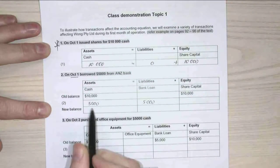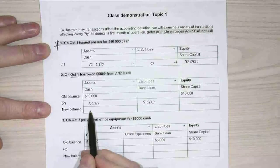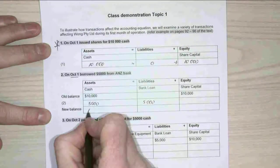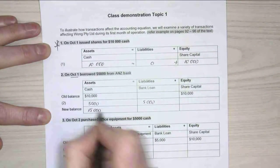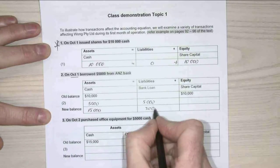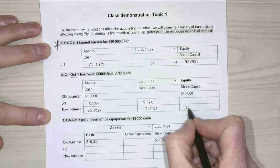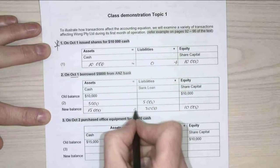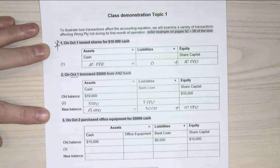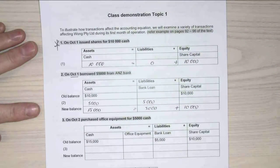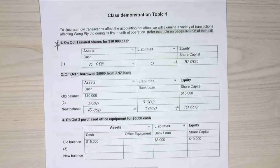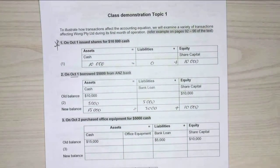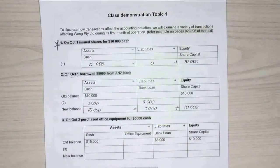So my new cash balance is $15,000. My bank loan is $5,000 and my share capital is $10,000, which means assets equals liabilities plus equity. This is very similar to the business transactions worksheets we did in accounting — we're looking for the two sides of every transaction.